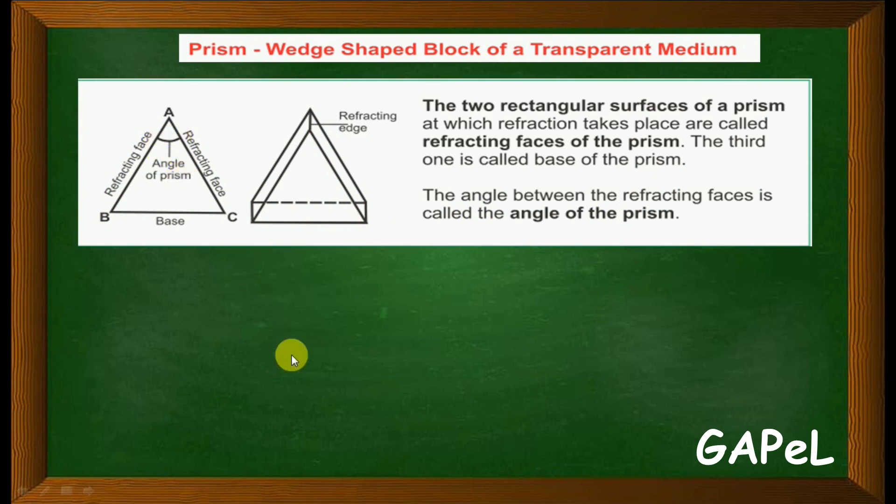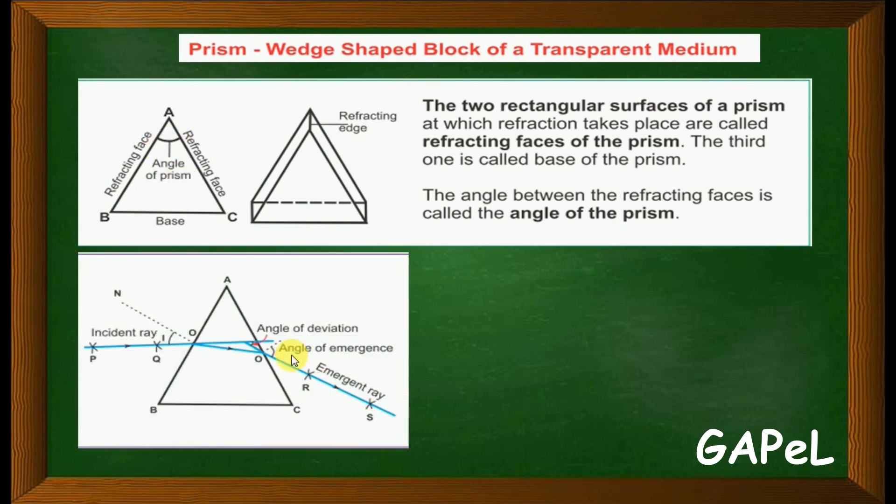This is your incident ray. When this is your incident ray, this will be its normal - perpendicular to the reflecting surface. This is your incident ray with angle of incidence. Instead of going straight, the ray gets bent over here. The ray bends from point to point.